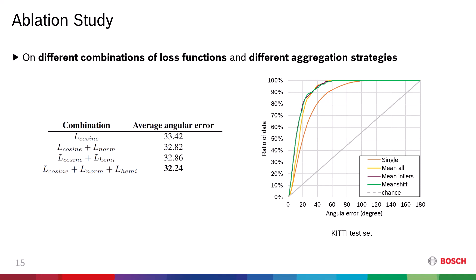The graph on the right side shows the cumulative sun angular error for different aggregation strategies on the KITTI test set. The best result is recorded when the mean shift result on the inlier estimates is utilized.